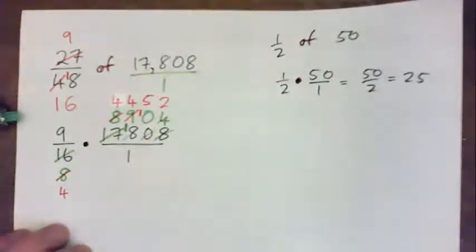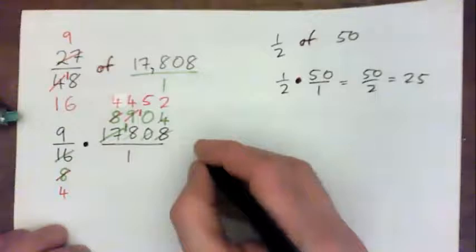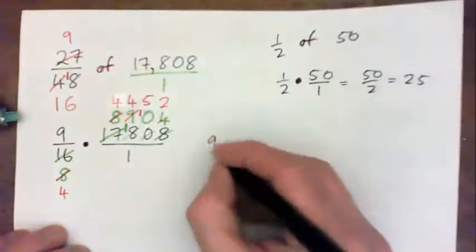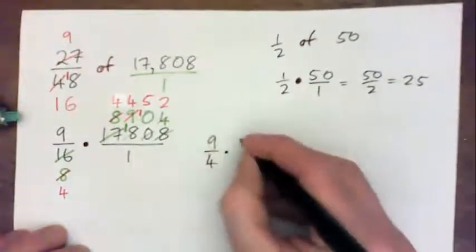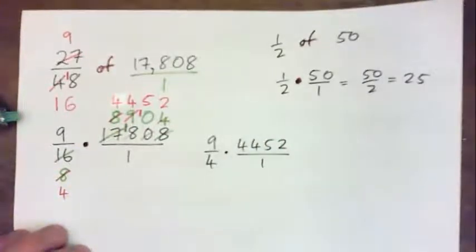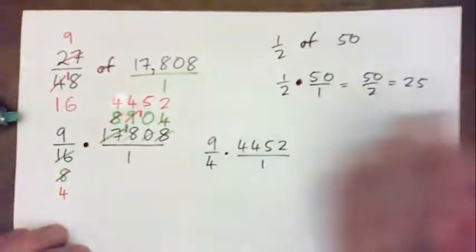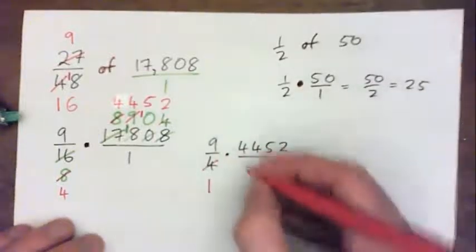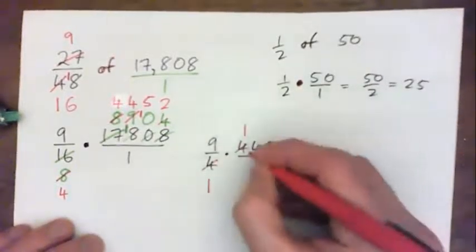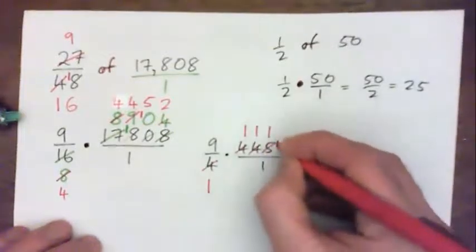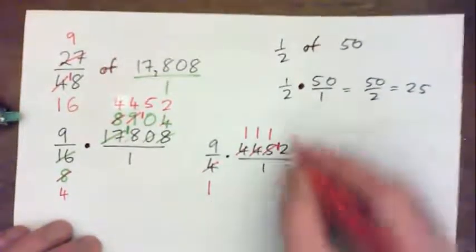And that could still be going down. That could still be going down because it's still even. I'm just going to write it out again just to make the video neater. But 9 over 4 times 4,452 over 1. And I'm just going to guess that 4 is going to go into both. I'm pretty sure it is. So 4 into 4 goes once. 4 into 4 goes once. 4 into 4 goes once. 4 into 5 goes once, remainder 1. 4 into 12, 3 times. So we have 1,113.